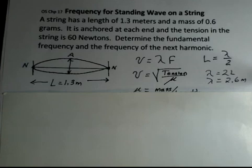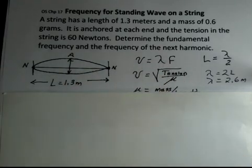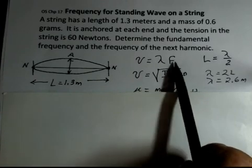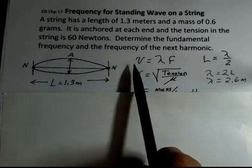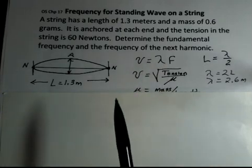There's a relationship between the speed of a wave, the wavelength, and the frequency of the wave. So we want to determine this frequency. We're going to need to know the speed of the wave on the string and the wavelength.